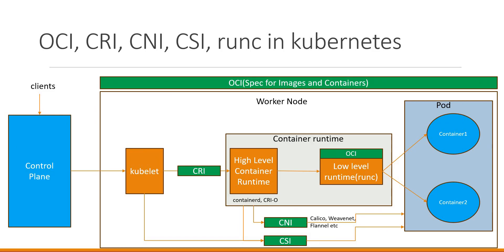The container images we use need to follow the specifications provided by OCI — Open Container Initiative. It provides the specifications for container images and containers. This means we need to follow the rules while creating images as well as while uploading them to a container registry like Google Container Registry. In addition to image specifications, OCI also provides specifications for containers — how a container needs to be created, how the lifecycle needs to be managed, and so on. The low-level runtime implements these OCI specifications to create and manage containers inside the pod.